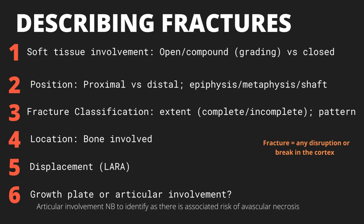When you come across fractures, these should be described in as much detail as possible using six steps. First, identify any soft tissue involvement by indicating if the fracture is open or closed — does it communicate with the external environment? If it is open, provide the Gustilo-Anderson grade. Then describe the position of the fracture: is it in the proximal or distal aspect of the bone? Is it in the epiphysis, metaphysis, or shaft in the case of a femur fracture, or in the PIP or DIP in the case of a hand fracture? You should then classify the fracture, indicating if it is complete or incomplete and describing its pattern.